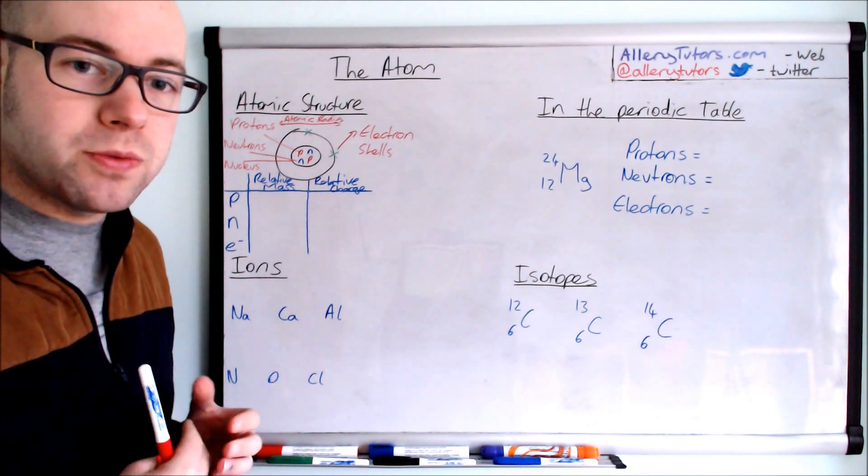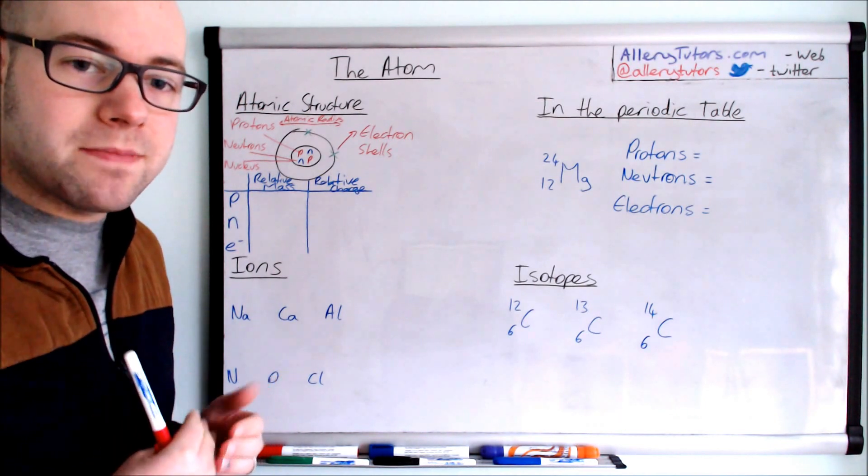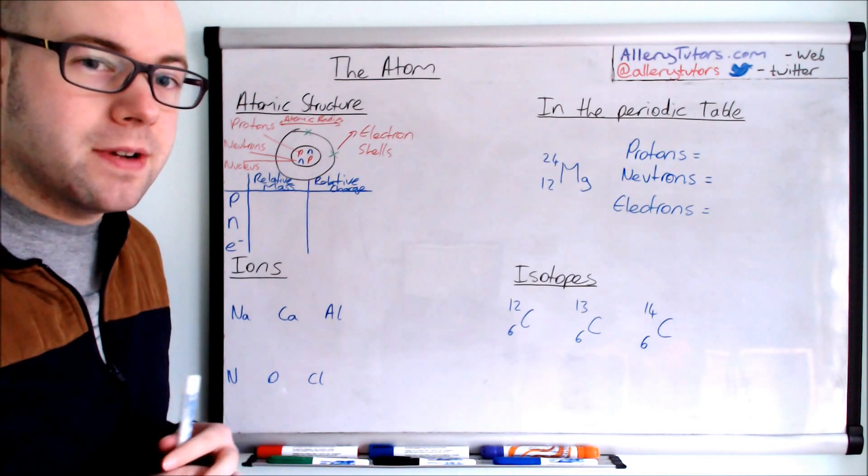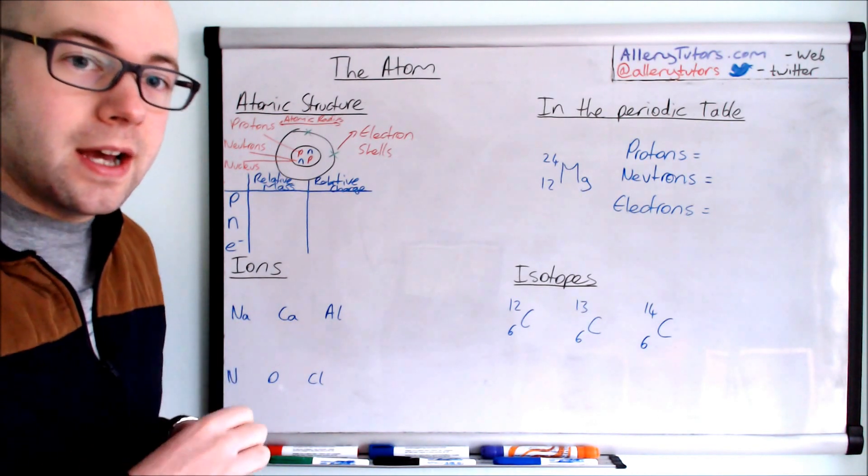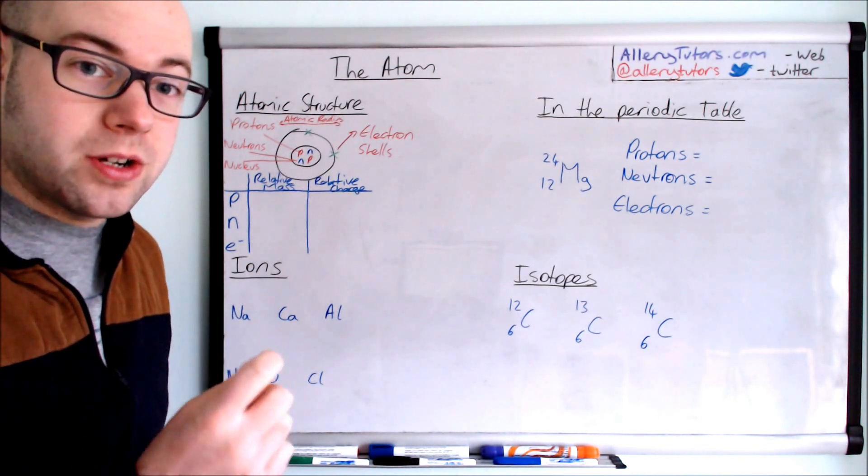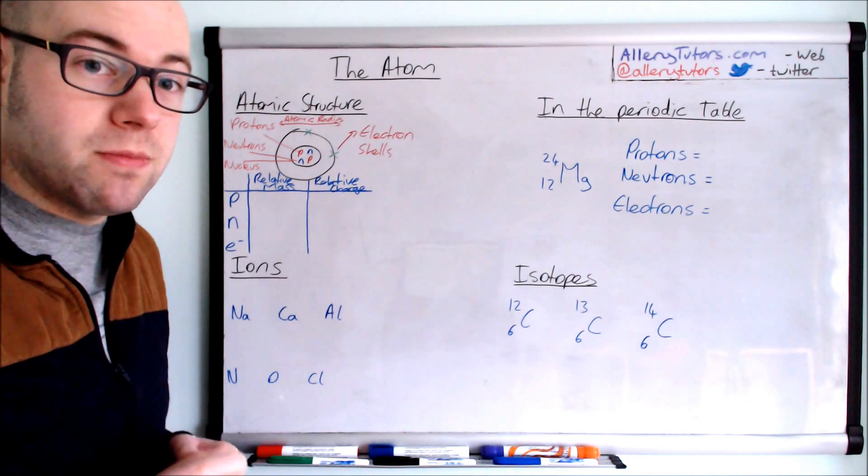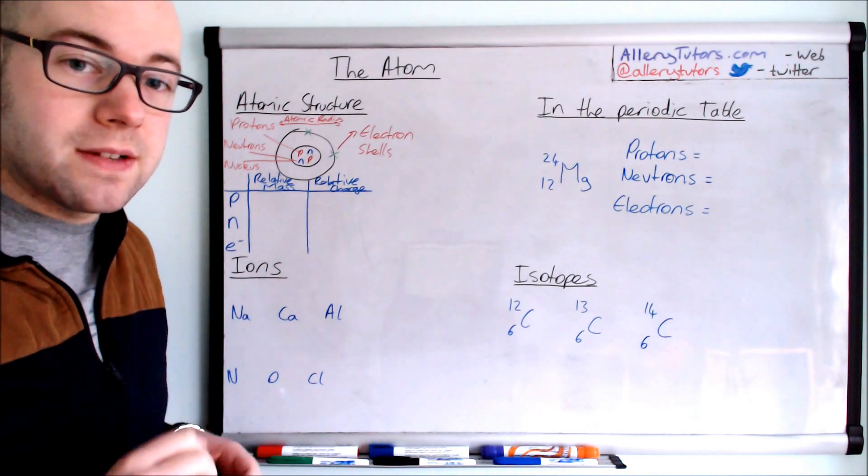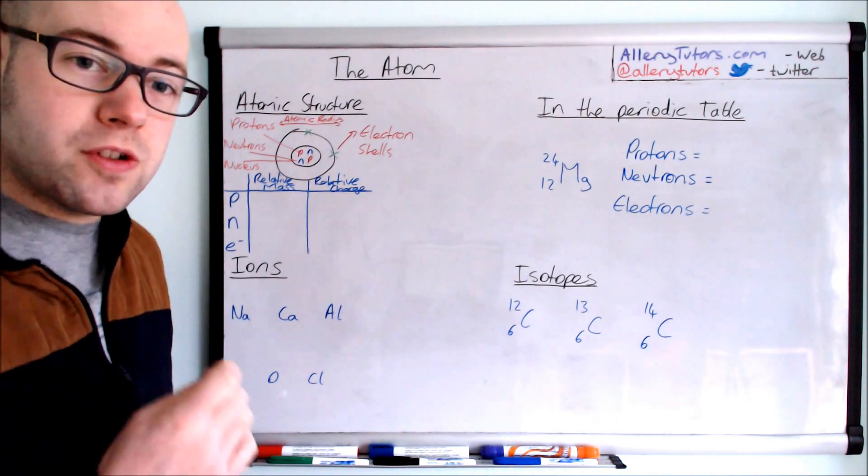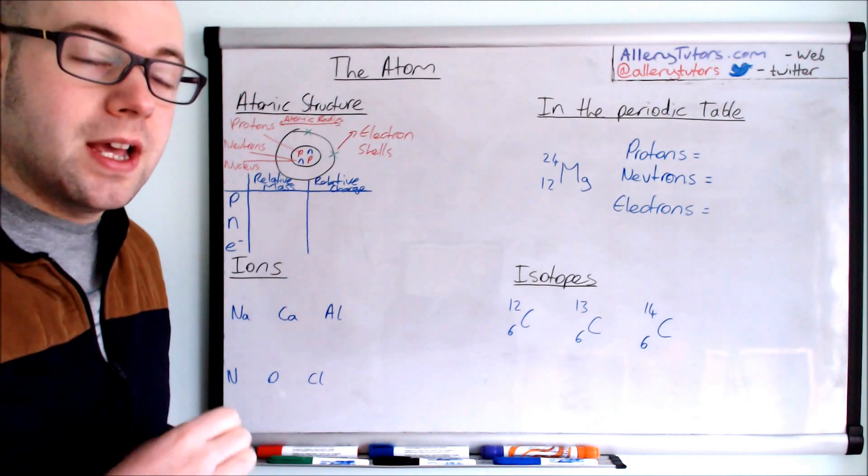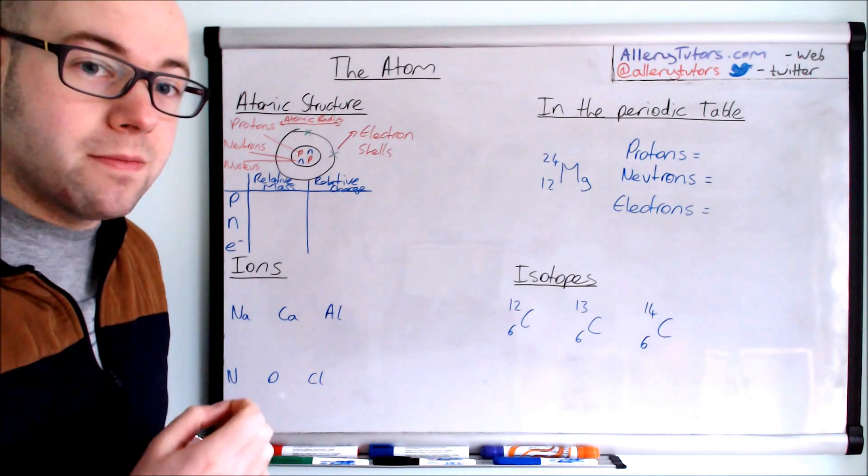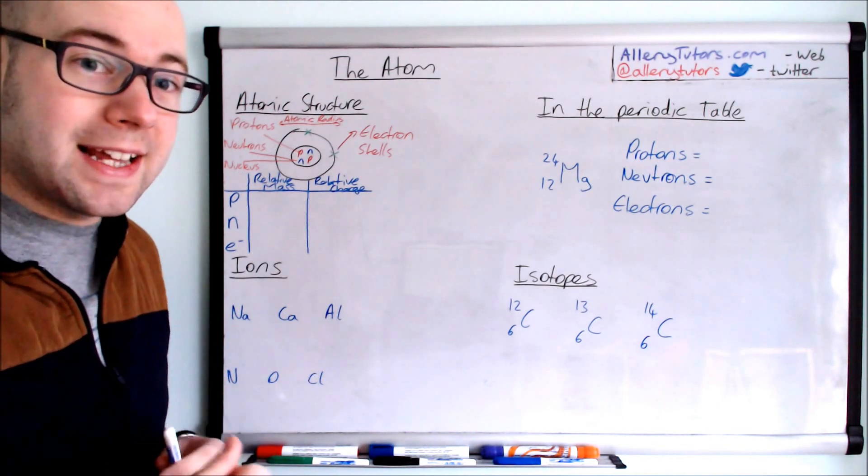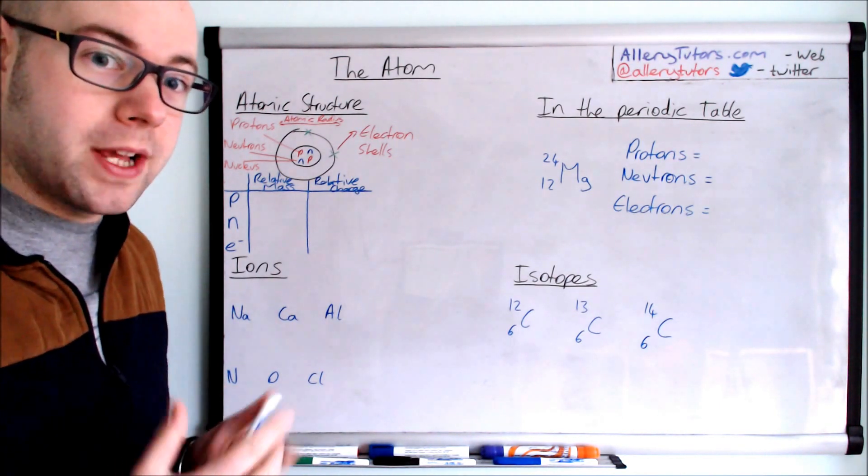And we'll also need to know the exam boards want you to know about the relative mass and relative charge of these. Now sometimes the exam board can give you exact masses. These exact masses or charges you don't need to remember but you do need to know the relative masses and relative charges. But just beware in the exams they do give you specific masses and they ask you to calculate the mass of the atom. Make sure you use their numbers and not the relative ones.